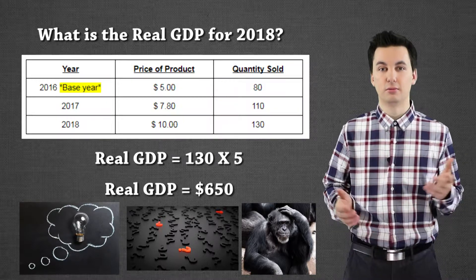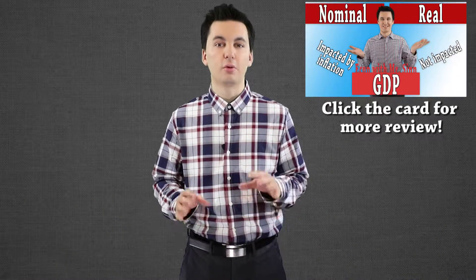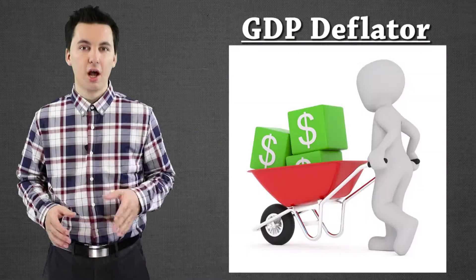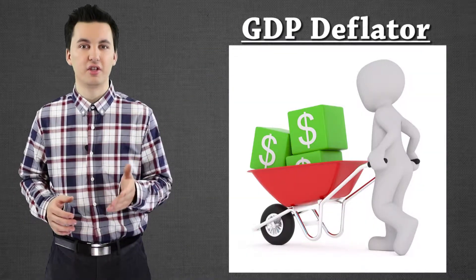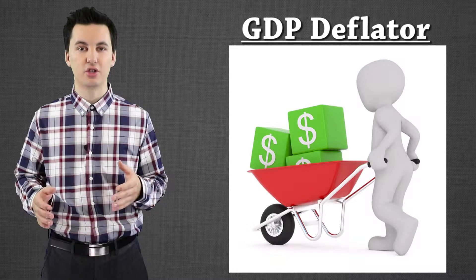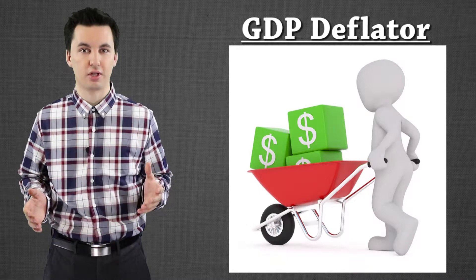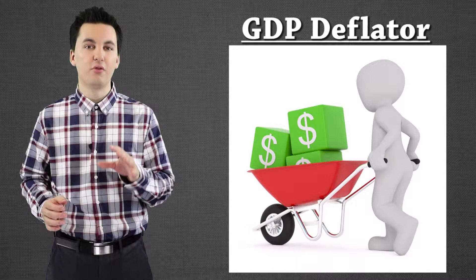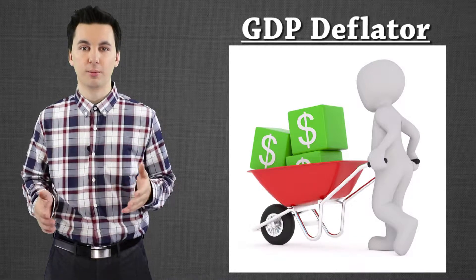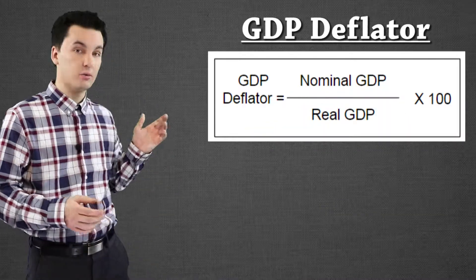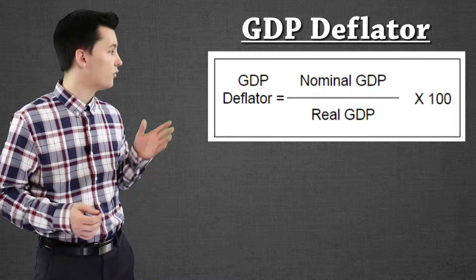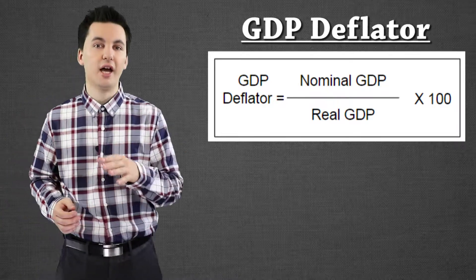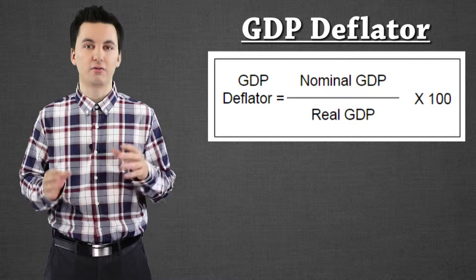Now let's get into the GDP deflator. I just went over nominal and real GDP really quick. The GDP deflator is really important. Unlike other things we've looked at like the CPI, the GDP deflator is going to show us the inflation rate for the entire country — it's looking at the entire society. To find the GDP deflator, we'll use this formula: GDP deflator equals nominal GDP over real GDP, then times that by 100. This will show our inflation rate.